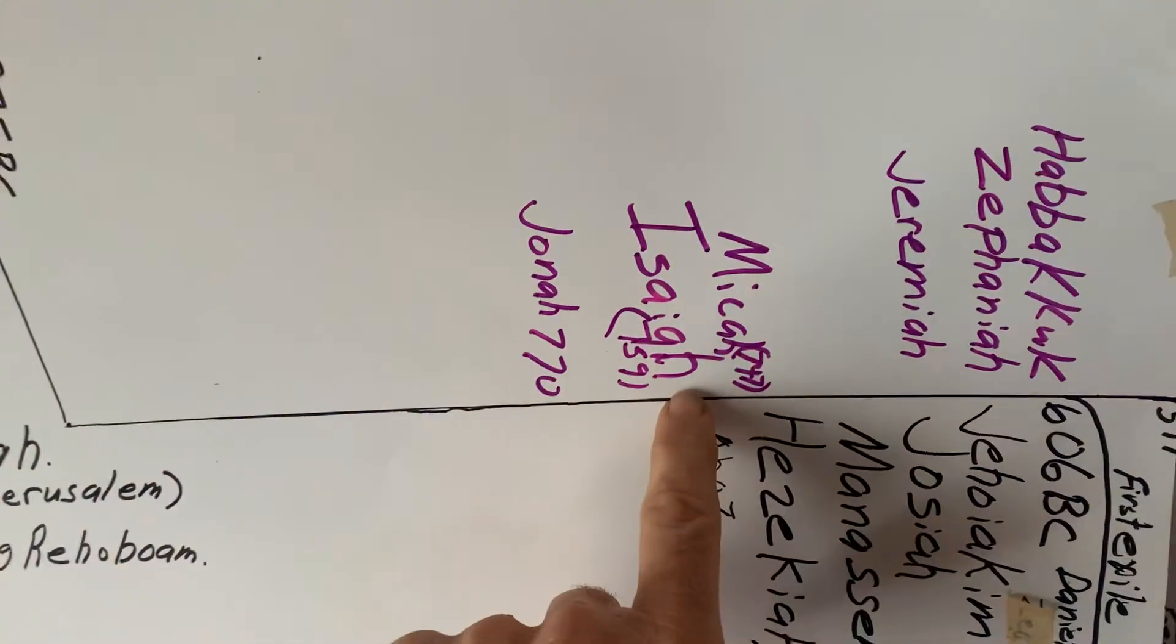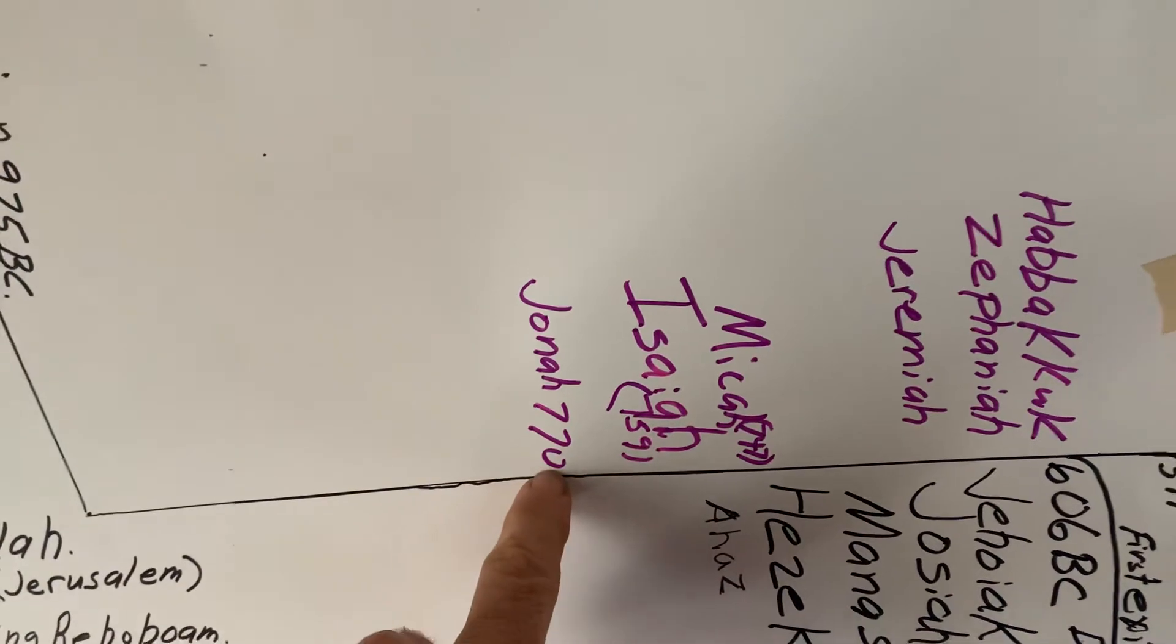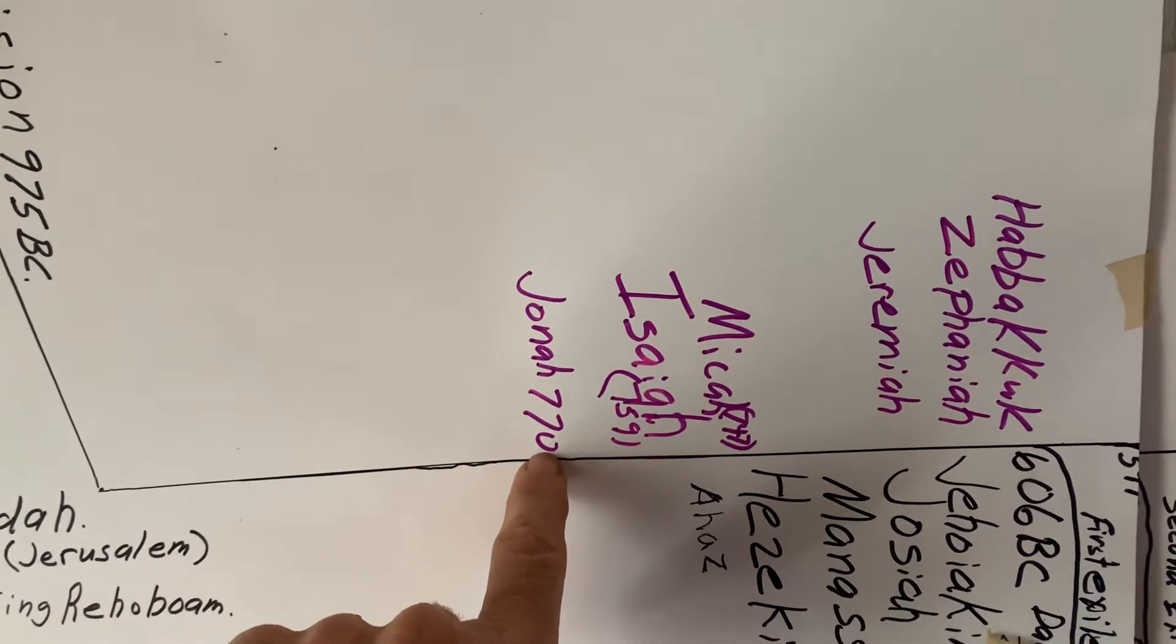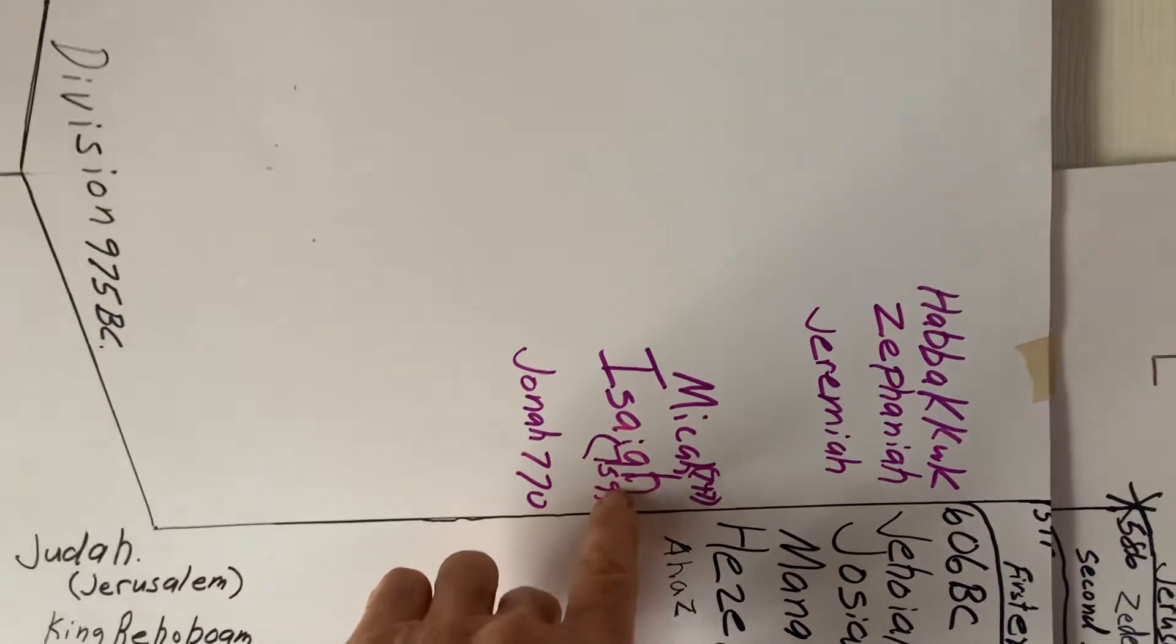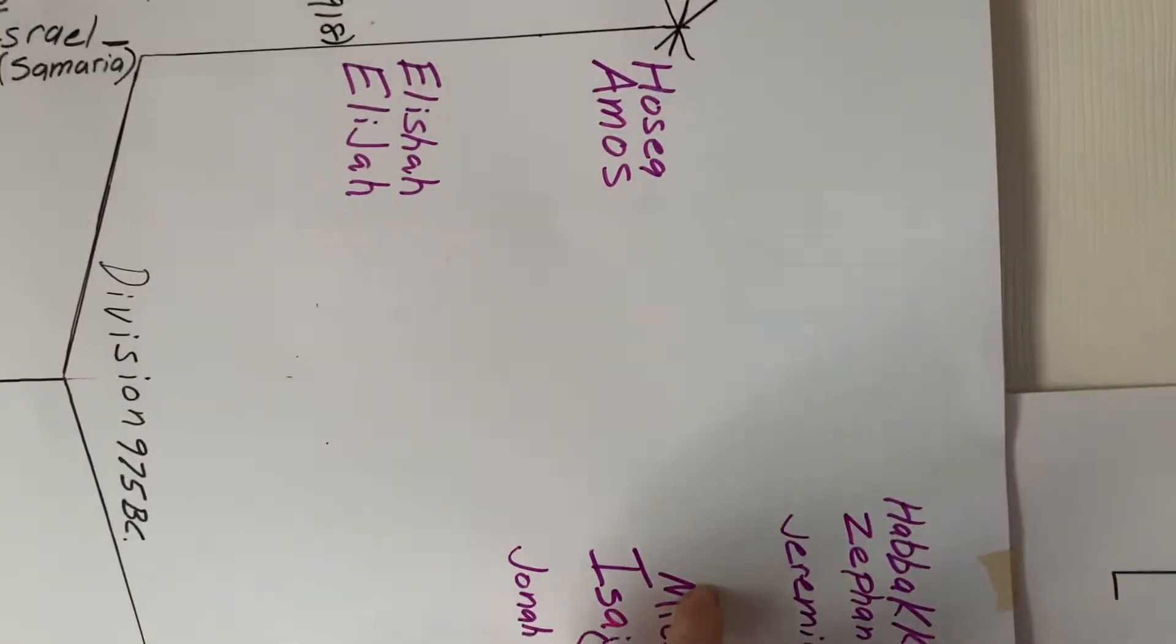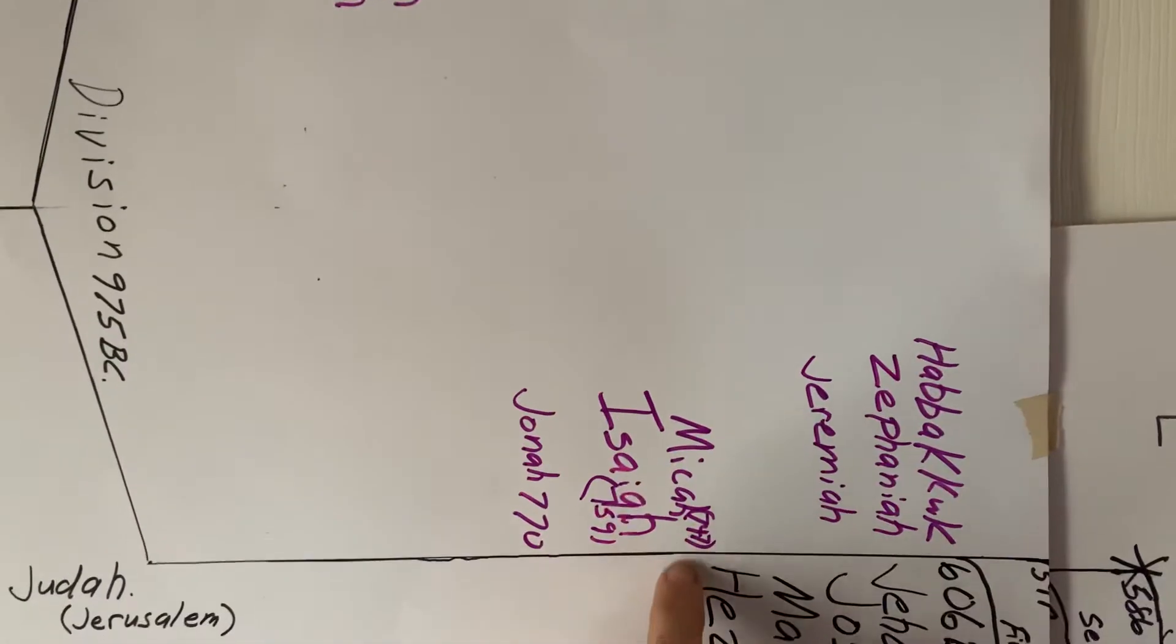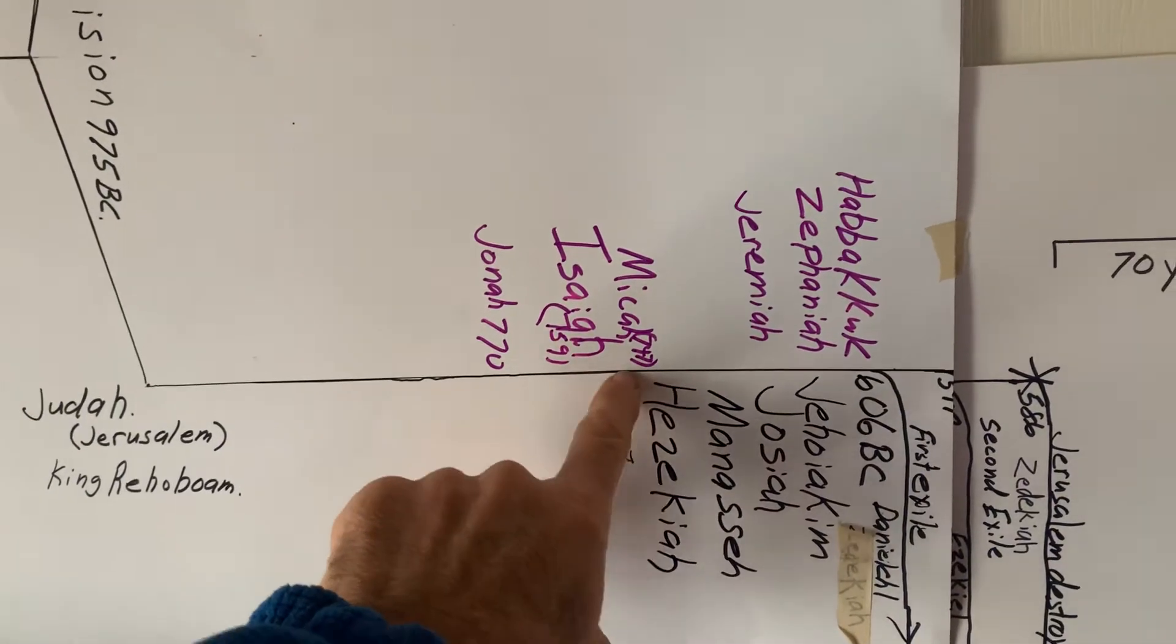In the south, some of these names are going to be familiar. Jonah issued a warning to Assyria, if you can believe that. So God is actually interested in the Gentile in the Old Testament. Isaiah and Micah, or at least Isaiah, is on the scene when the northern kingdom of Israel falls. And there is no more Israel to the north.